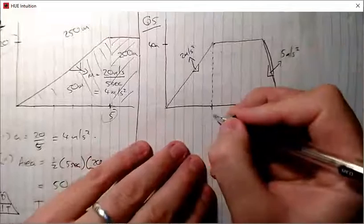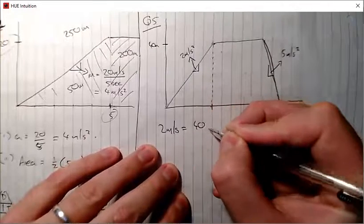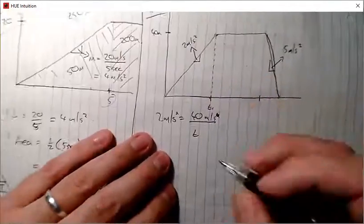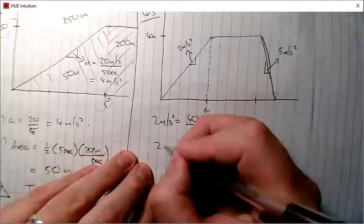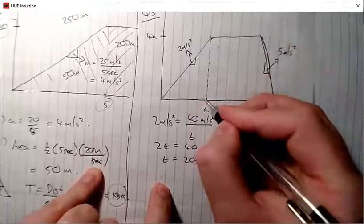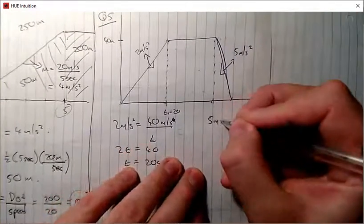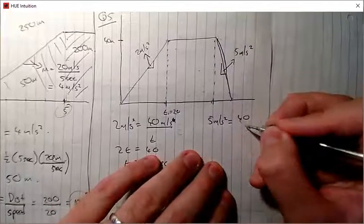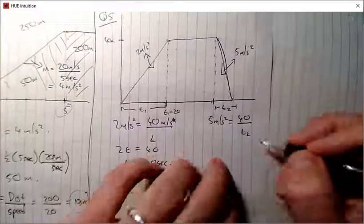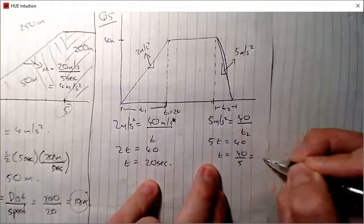To find the distances you first need the time intervals. For acceleration: slope equals rise over run, so two meters per second squared equals 40 over t₁, giving 2t₁ = 40, so t₁ = 20 seconds. For deceleration: five meters per second squared equals 40 over t₂, giving 5t₂ = 40, so t₂ = 40 ÷ 5 = 8 seconds.